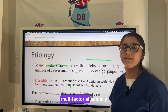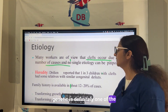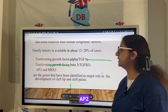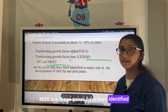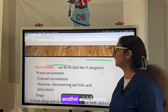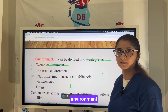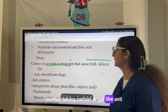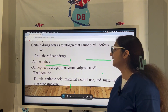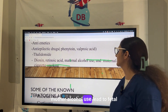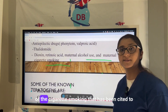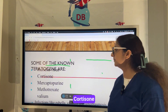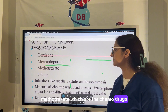The etiology is multifactorial. Genetics is definitely one logical reason — cleft lip and palate are more prevalent in families. Transforming growth factors such as PDGFA, TGF-B3, AP2, and MSX1 genes have been identified as playing a major role. Environmental factors include womb environment, external environment, nutritional deficiency in the mother, anti-epileptic drugs like phenytoin or thalidomide, chemotherapy drugs, retinoic acid, maternal alcohol use leading to fetal alcohol syndrome, and cigarette smoking. Known teratogens include cortisone, mercaptopurine, methotrexate, and valium.